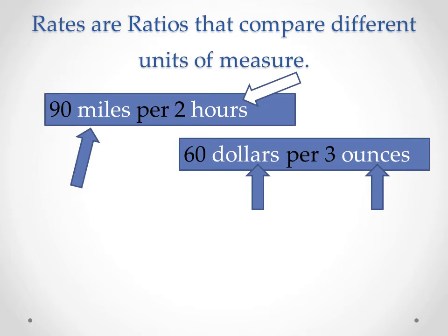In our two examples, we have 90 miles per two hours — miles and hours are different units. In the second example, we have $60 per three ounces, so we're comparing dollars and ounces, which are also different units.